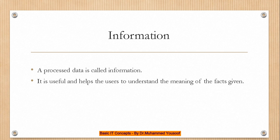The next concept is information. What is information? A processed data is called information. That means there is some manipulation done on the data, some changes made so that it becomes organized. The difference between data and information is that data is not useful, whereas information is useful and helps users understand the meaning of the facts. For example, '2016-00123 Ahmad Muslim, BA in MIS' — this makes it very clear that this is the ID of a student studying BA in MIS at Dhofar University.